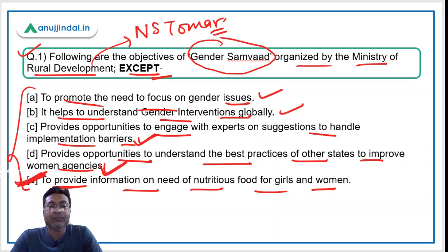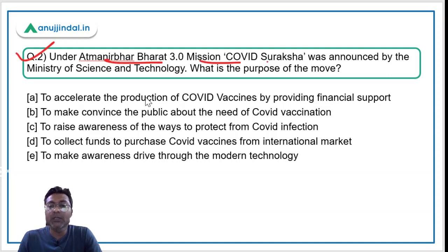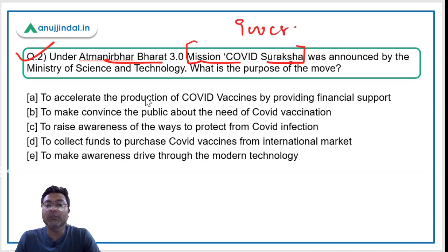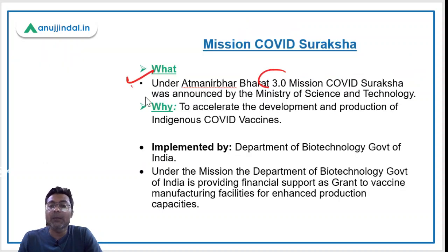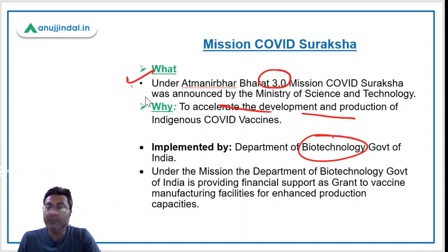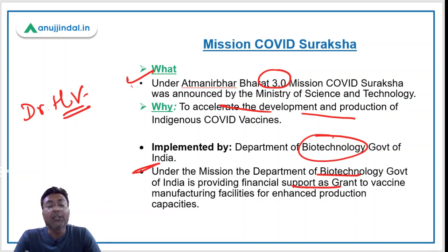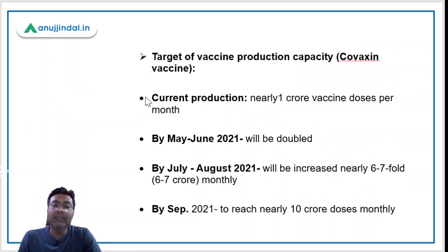Question 2 is about Mission COVID Suraksha under Atmanirbhar Bharat 3.0. Under this mission, 900 crores were allotted to provide financial support to pharma companies for boosting COVID vaccine production in India. It was announced by the Ministry of Science and Technology and is being implemented by the Department of Biotechnology, headed by Dr. Harsh Vardhan.